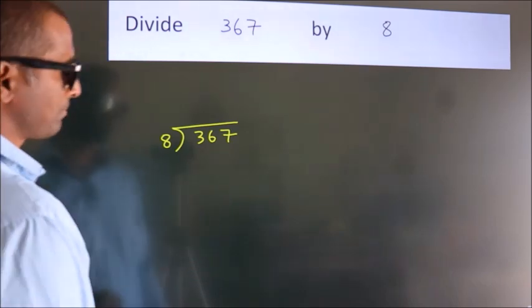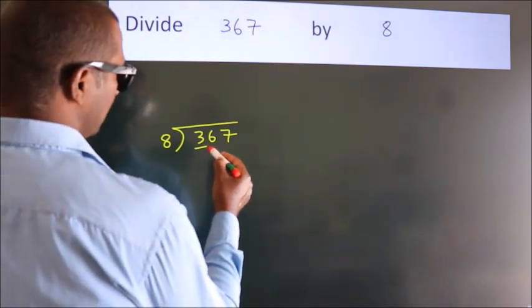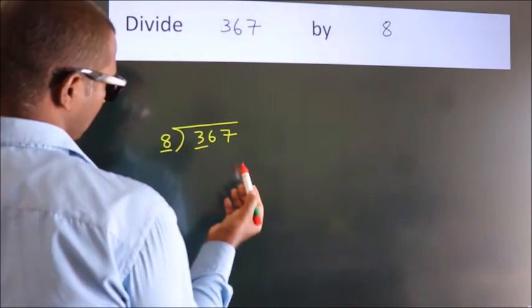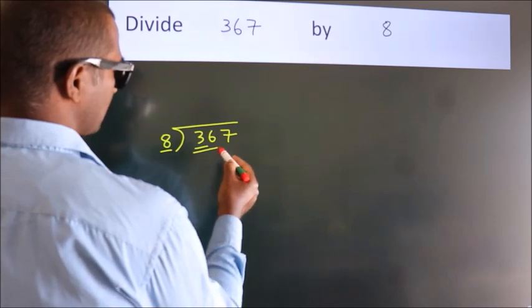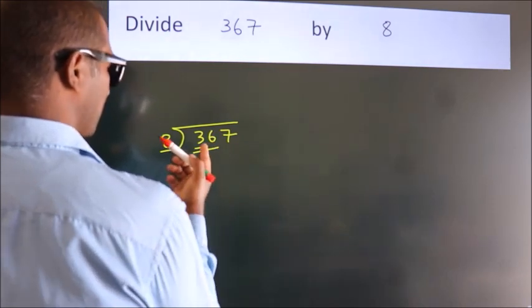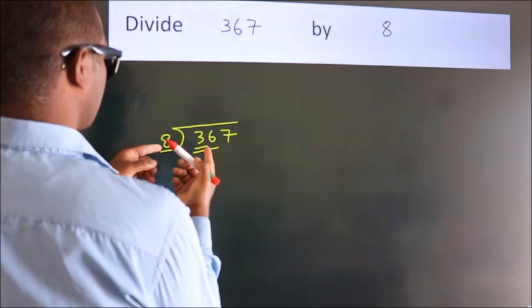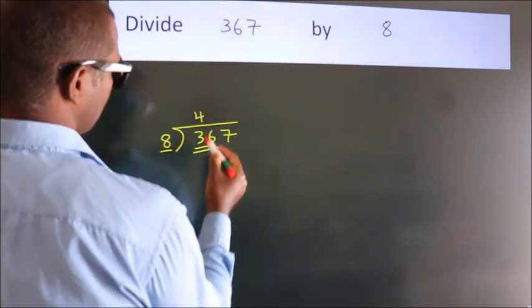Next, here we have 3, here 8. 3 is smaller than 8, so we should take two numbers: 36. A number close to 36 in the 8 table is 8 fours, 32.